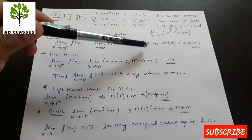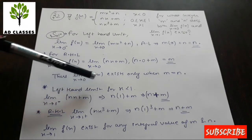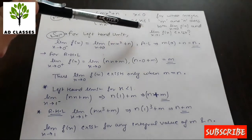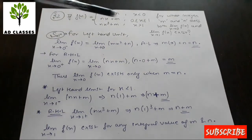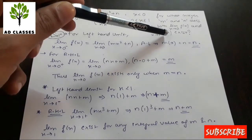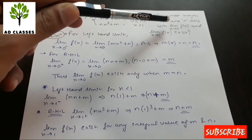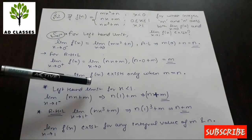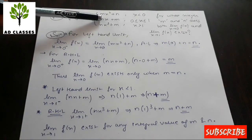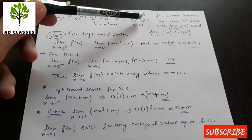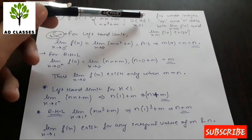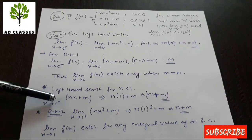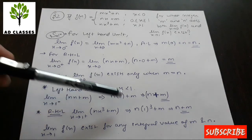The limit as x tends to 0 exists only when m equals n. Now for x = 1: the Left Hand Limit uses the second piece (nx + m), since x ≤ 1 in that piece. Denoting as limit x tends to 1 from the left, substituting x = 1 gives LHL = n + m.